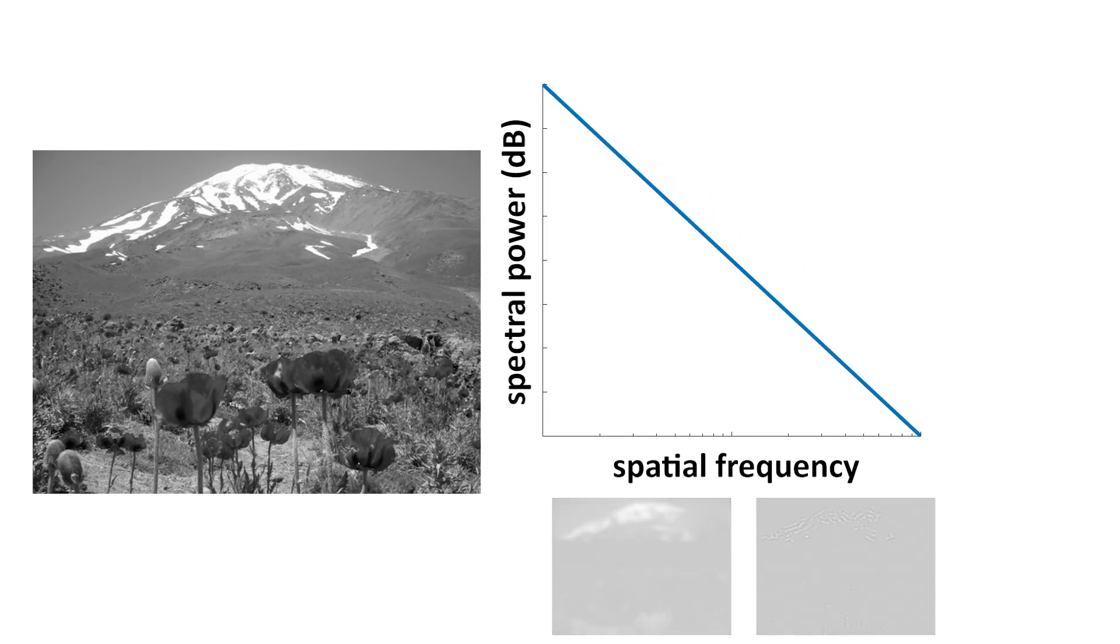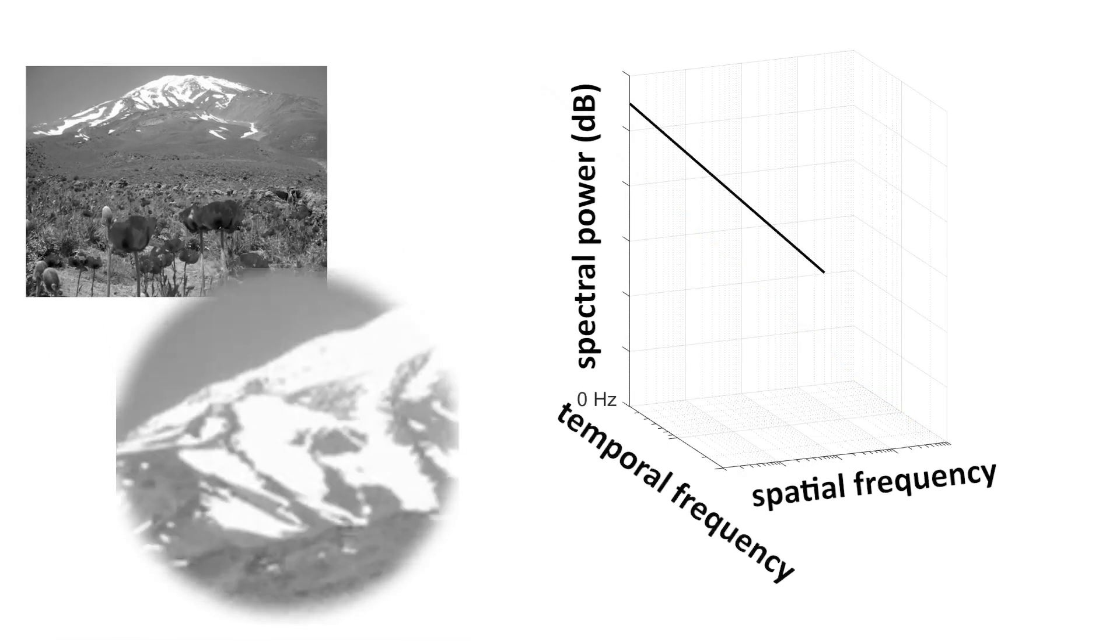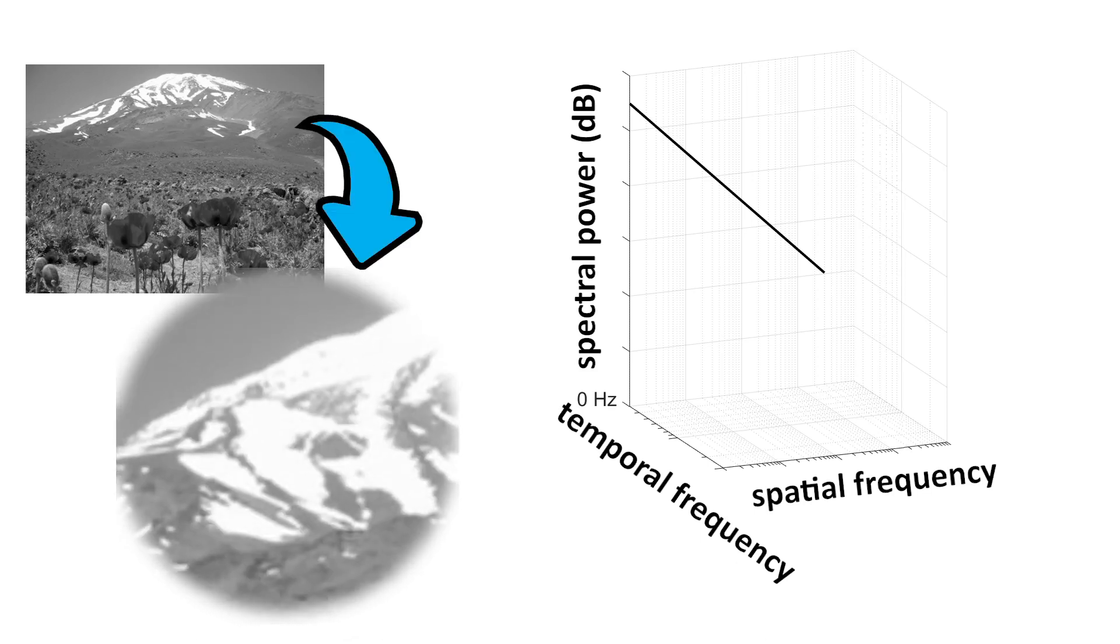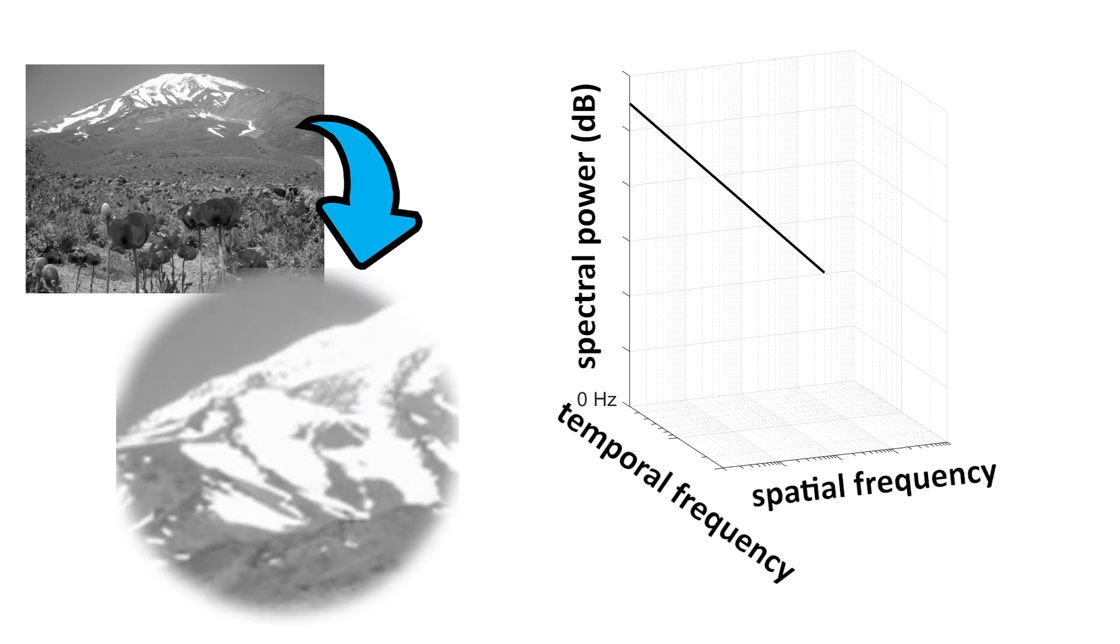So what happens to this power distribution when a saccade occurs? By moving the image over the retina, a saccade transforms the power of the input stimulus from space to time. That is, it redistributes the spatial power of a stationary scene across temporal frequencies of the retina.